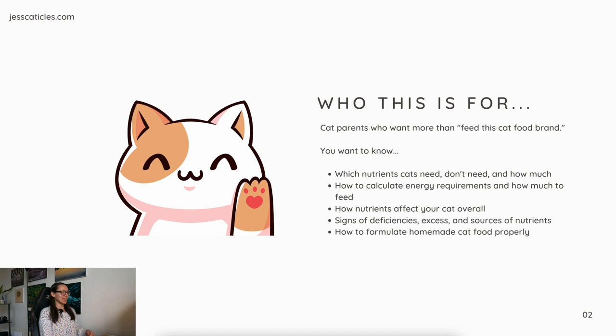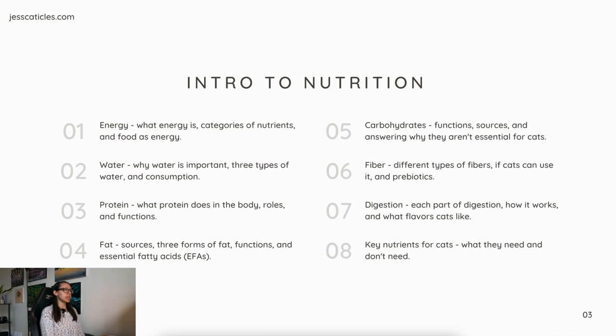In this section, Intro to Nutrition, we're going to cover energy — what it is, the categories of nutrients, and food as energy. Water — why water is important, three types of water and consumption. Protein — what it does in the body, the roles and its functions. Fats — different sources, three forms of fat, functions, and essential fatty acids. Carbohydrates — functions, sources, and why they aren't essential for cats. Fiber — different types of fiber, if cats can use it, and prebiotics. Digestion — each part of digestion, how it works, and what flavors cats like. And key nutrients for cats — what they need and don't need.